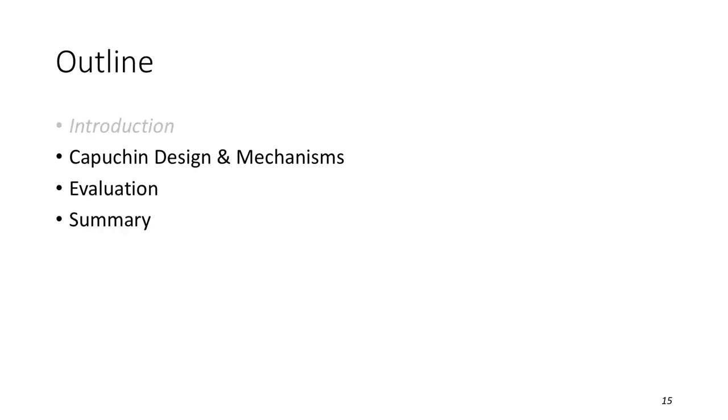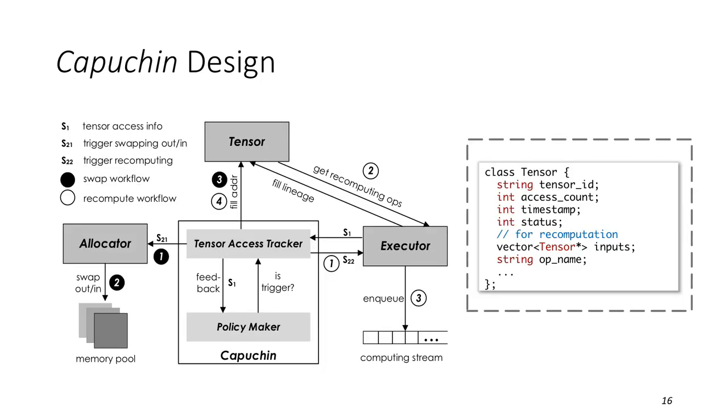Then we will introduce the design and mechanisms of Capuchin. The left figure is the architecture of Capuchin. It is composed of two modules, Tensor Access Tracker and Policymaker. Tensor Access Tracker interacts with executor tensor and allocator in deep learning frameworks to track tensor accesses, and carry out memory management operations related to a specific tensor access. Policymaker is responsible for making memory management policy decisions according to the tensor access information. We add some extra fields to tensor. The pair of tensor ID access count can specify a specific tensor access. The inputs and operation name together build the lineage of tensor which is used for recomputation.